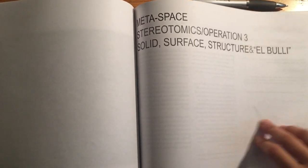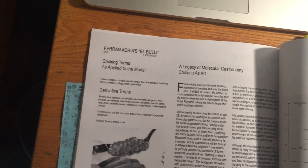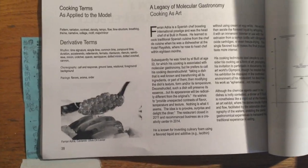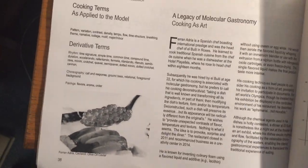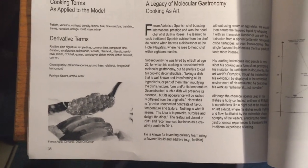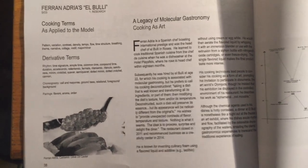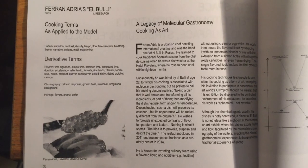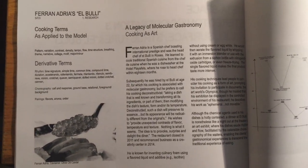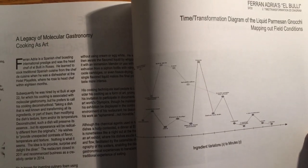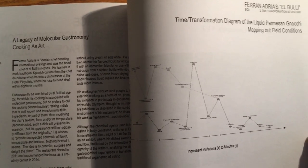Moving on to the third project — El Bulli's particular dish, the one that did the spherification, was particularly of interest to me. Here I explored the different ways that Ferran Adrià had come up with his different cooking ideas: through experimentation, through defamiliarizing us with the original concept of cooking, and I think that is what enabled him to reach the status of artist that he had attained. Over here we see a time-transformation diagram of the liquid parmesan gnocchi, and eventually I wanted to apply this idea.